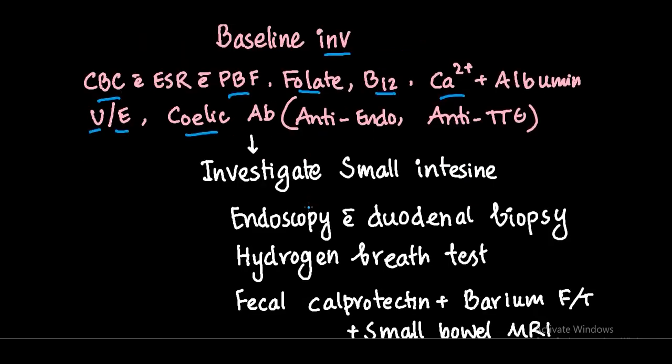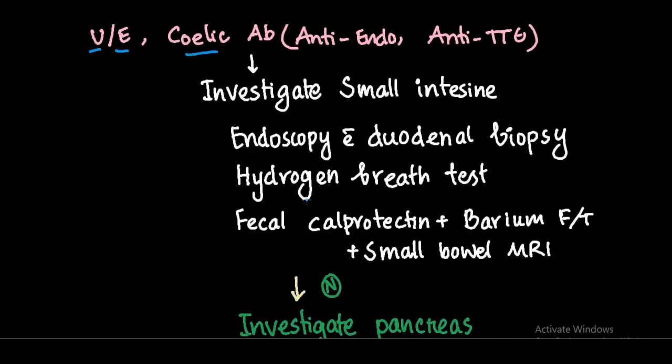After baseline investigations, we investigate the small intestine. Starting with endoscopic biopsy of the duodenum — we will typically find villous atrophy in patients with celiac disease, also in dermatitis herpetiformis and tropical sprue. We also do the hydrogen breath test to identify small intestinal bacterial overgrowth.